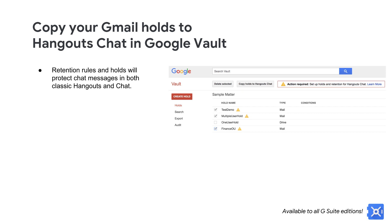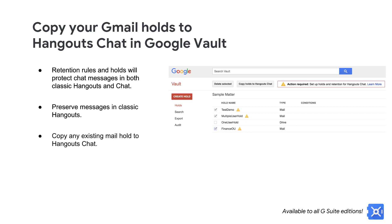Beginning April 16, 2019, mail retention rules and holds will stop protecting chat messages in classic Hangouts. Instead, Hangouts Chat retention rules and holds will protect chat messages in both classic Hangouts and Chat. You can continue to preserve messages in classic Hangouts before this April date by copying your holds from mail to Hangouts Chat. We're adding a new feature in Vault where you can copy any existing mail hold to Hangouts Chat by selecting the matter that contains the Gmail hold and clicking Copy Holds to Hangouts Chat. To learn more, check out the Help Center.